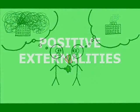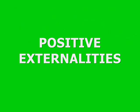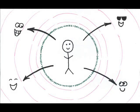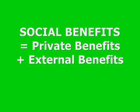What about positive externalities? Just as you can make choices that impose costs on others, you can also make choices that result in benefits to others. If this is the case, then social benefits equal the private benefits, benefits to the decision-maker, plus external benefits, benefits to others.